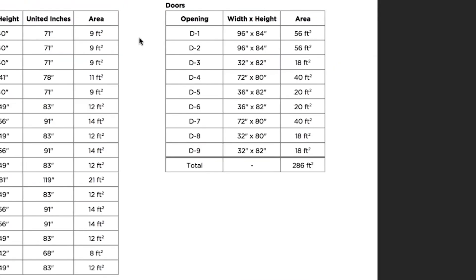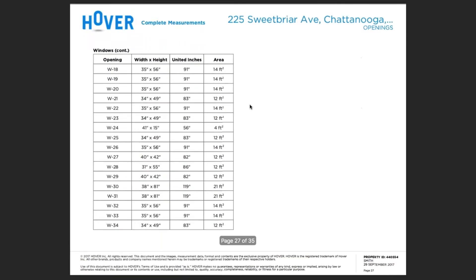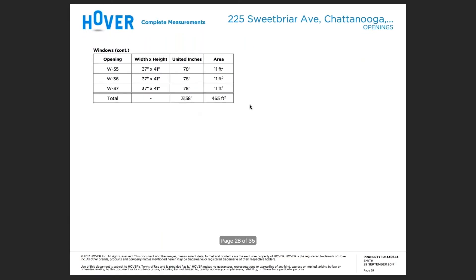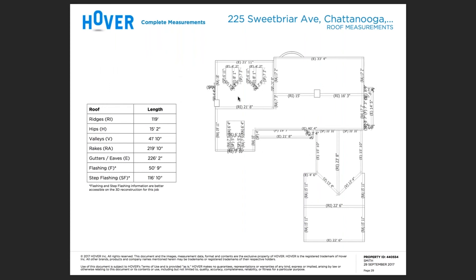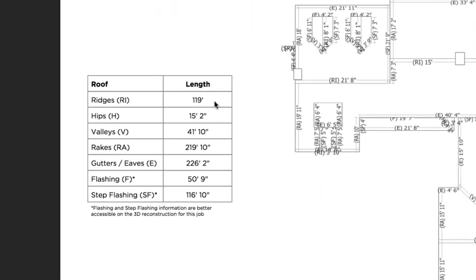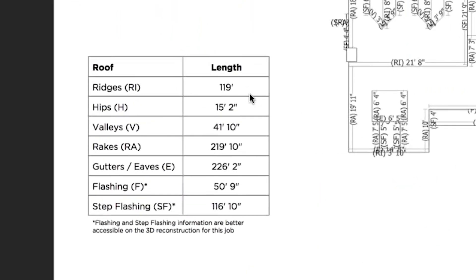For the right here, you'll find the entire door schedule. The roof measurements report will provide a populated roof diagram with all the linear line segments provided to the left. Here we'll be providing the ridge, the hip, valleys, rakes, eaves, gutters, flashing, and step flashing.